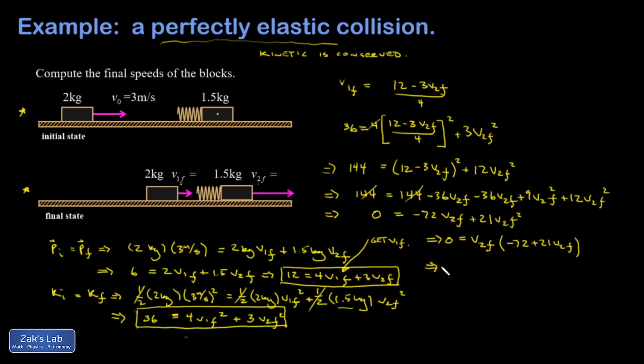And so I get two solutions for v2 final. One of them is that v2 final is equal to zero. The other one is if this other factor is equal to zero, and if I add 72 to both sides and divide by 21, v2 final equals 72 over 21 is my second solution. And a decimal approximation for that is 3.43 meters per second if I keep three sig figs.